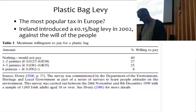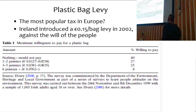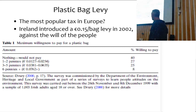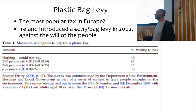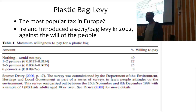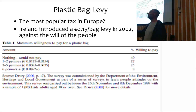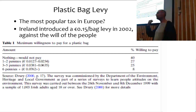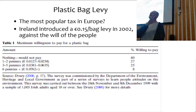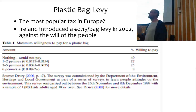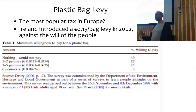40 percent answered no, and the majority said maybe a few pennies. The tax introduced was 15 euro cents — more than a few pennies. The people did not like it at all. The reason it was introduced was plain politics: the Minister for the Environment, during a time of austerity, could not convince the Minister of Finance to increase his budget, so he introduced this levy whose revenue flows straight into the Ministry for the Environment rather than into the treasury.